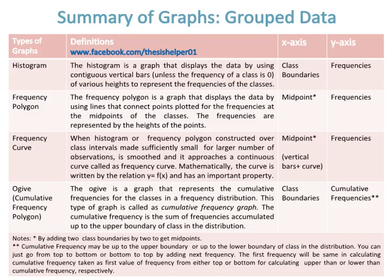The ogive is a graph that represents the cumulative frequencies for the classes in a frequency distribution, also called a cumulative frequency graph. The cumulative frequency is the sum of frequencies accumulated up to the upper boundary of a class. Class boundaries are on the x-axis and cumulative frequencies on the y-axis. Notes: add two class boundaries and divide by 2 to get midpoints. Cumulative frequency may be calculated up to the upper or lower boundary, going from top to bottom or bottom to top by adding the next frequency.